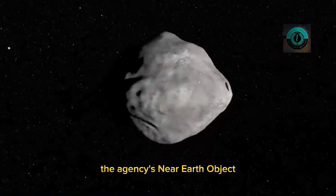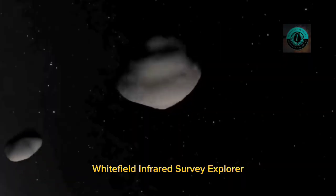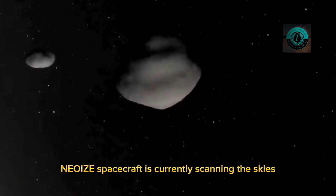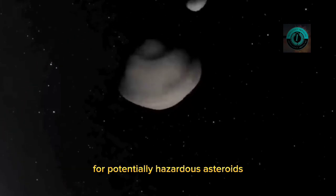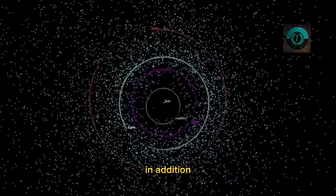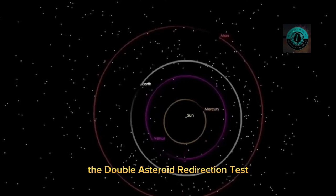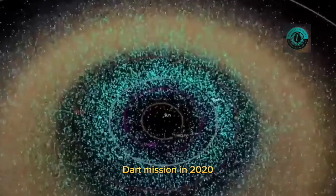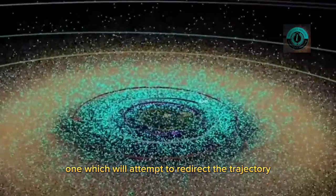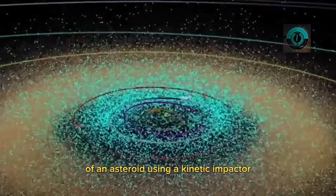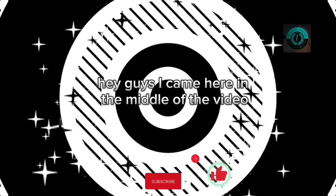The agency's near-Earth object Wide-field Infrared Survey Explorer spacecraft is currently scanning the skies for potentially hazardous asteroids. In addition, NASA is also planning to launch the Double Asteroid Redirection Test mission in 2021, which will attempt to redirect the trajectory of an asteroid using a kinetic impactor.